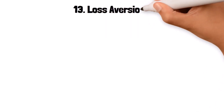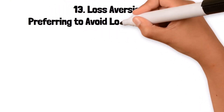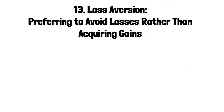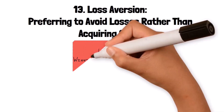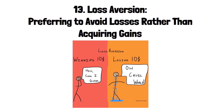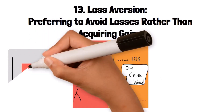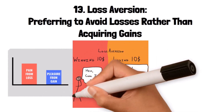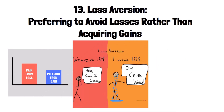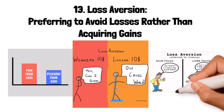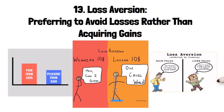13. Loss Aversion: preferring to avoid losses rather than acquiring gains. Loss aversion is a cognitive bias where people prefer to avoid losses rather than acquire equivalent gains. The pain of losing something is psychologically more impactful than the pleasure of gaining something of equal value. For example, someone might refuse to sell a stock that has lost value, hoping to avoid the psychological pain of realizing the loss, even if selling would be the more rational decision.